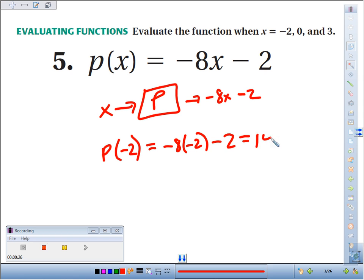If we take p of 0, the function value at 0 would be negative 8 times 0, which is 0, minus 2 makes negative 2.